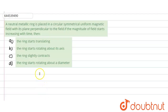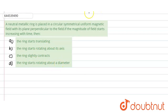Hello everyone, let us start with our question. In this question it is given that there is a neutral metallic ring which is placed in a circular symmetric uniform magnetic field with its plane perpendicular to the field. Now if the magnitude of the field starts increasing with time, we need to find whether the ring would start translating, rotate about its axis, contract, or rotate about its diameter. We need to check each option one by one.